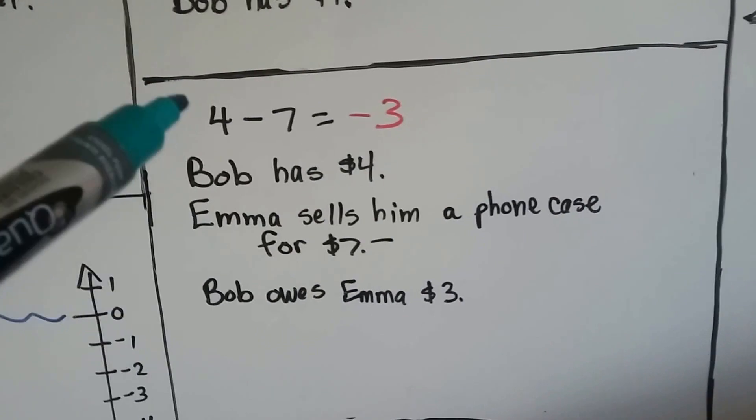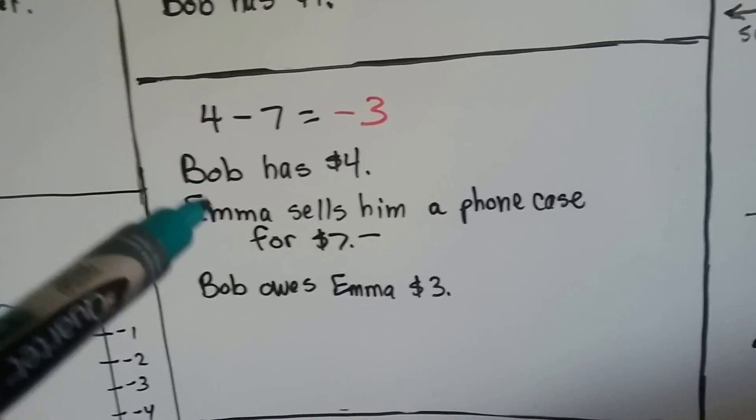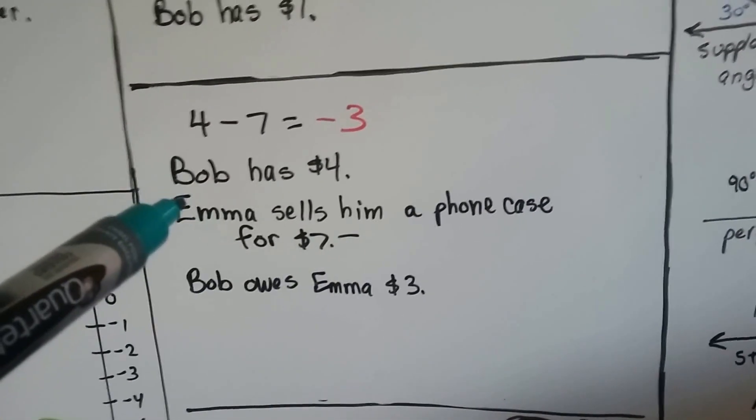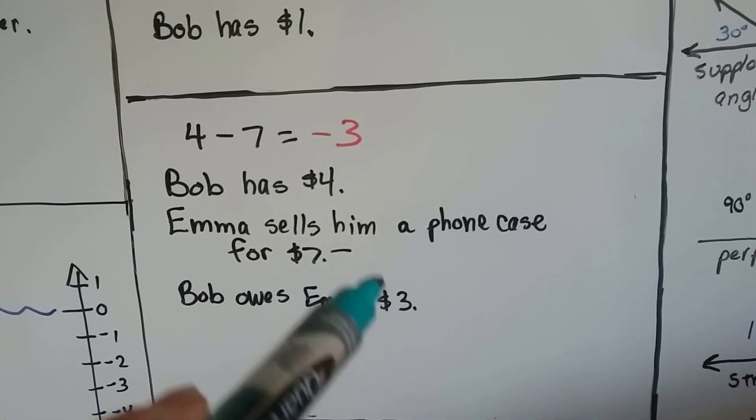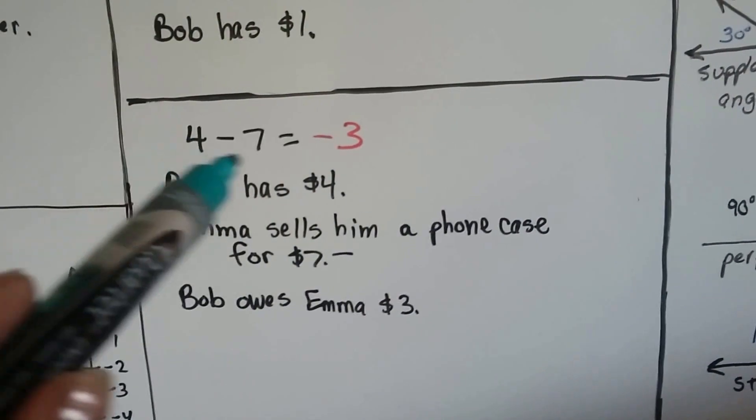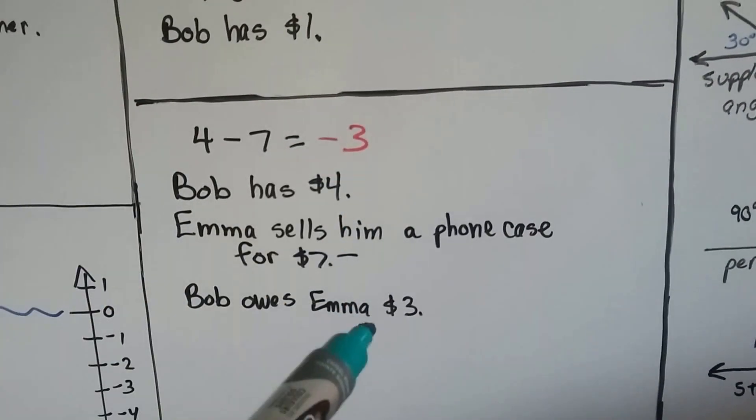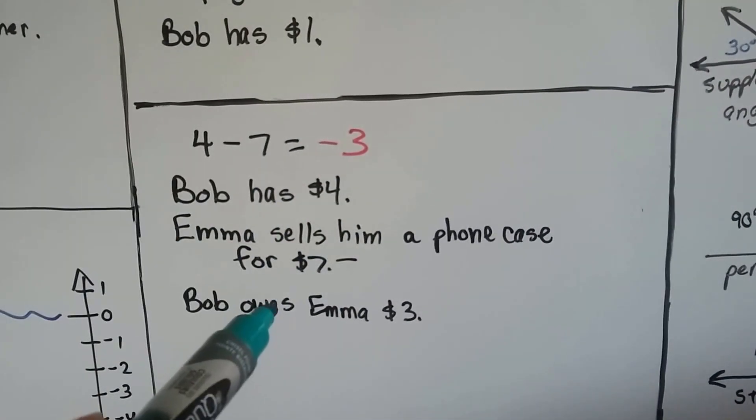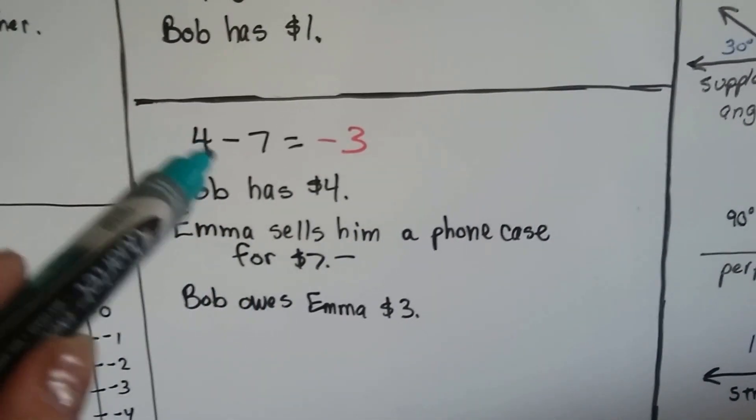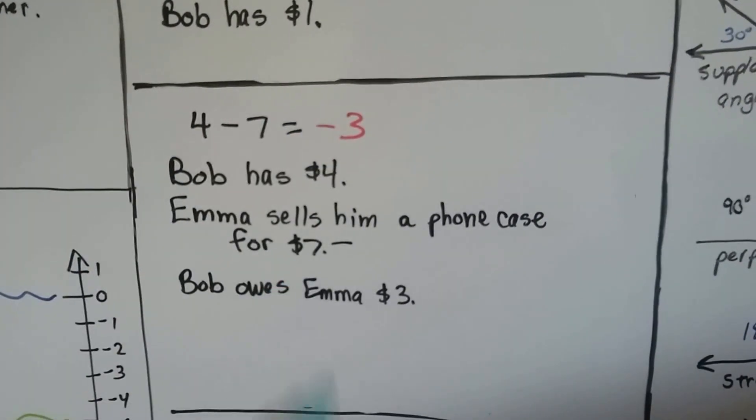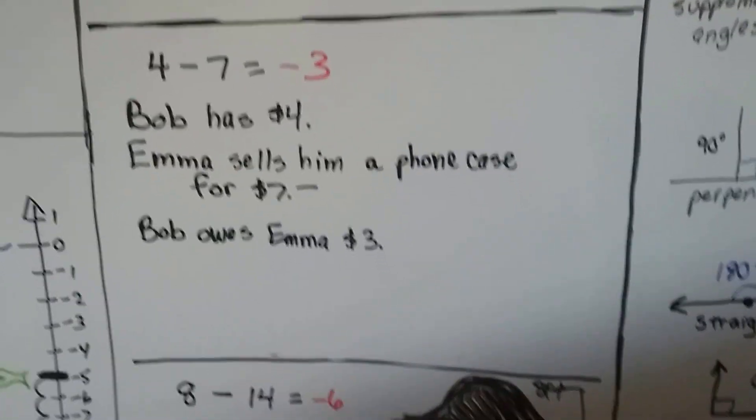Now Bob has $4 to his name, but Emma sells him a phone case for $7. So now he owes her $3. He gave her the $4, but he's still $3 in debt to her because he didn't have the full $7. So they made a deal and she said, fine, you give me the money you've got and you're going to owe me $3. And he was like, okay.